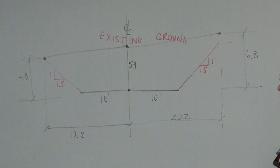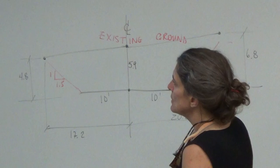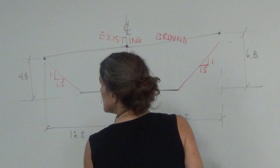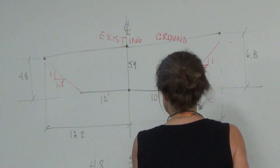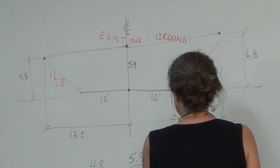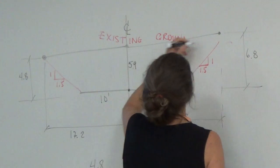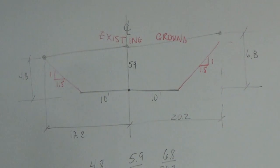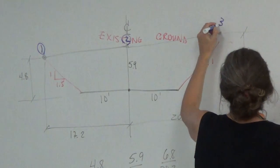And then the point to the left is 4.8 up but 17.2 over. And the point on the right is 20.2 over from the origin point and 6.8 up. So now how would we do the double area method? Let's start with this point, and we can put negatives in later on. So we have 4.8 over 17.2, we have 5.9 over 0, and we have 6.8 over 20.2. So far I've put in these points — let's call it point 1, 2, and 3.